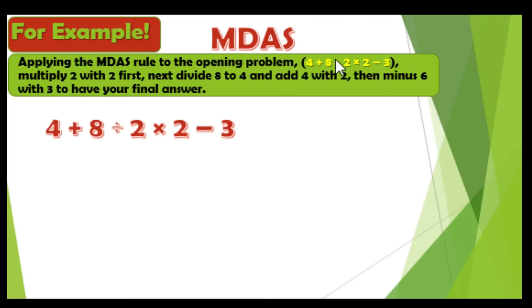Now for example class, we have here our MDAS rule. Applying the MDAS rule to the opening problem: 4 plus 8 divided by 2 multiplied by 2 subtracted by 3. Multiply 2 with 2 first, next divide 8 to 4, and add 4 with 2, then minus 6 with 3 to have your final answer.